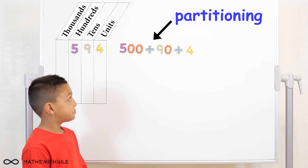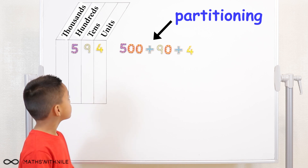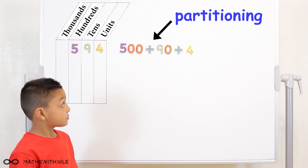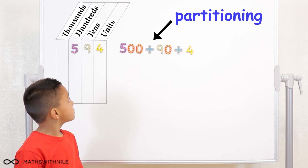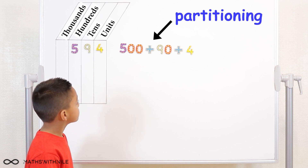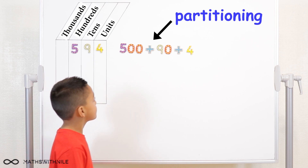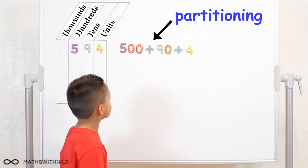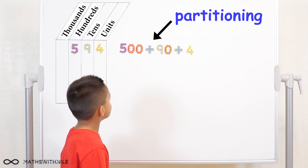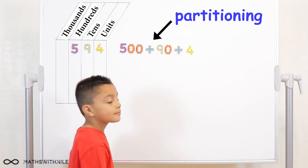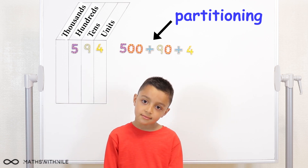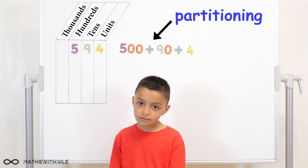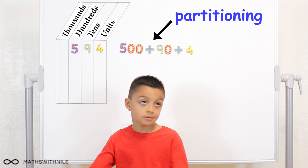I've broken up that number into hundreds, tens, and units to show the separation of the number in terms of its values. So can you do another number for me and do the partition?